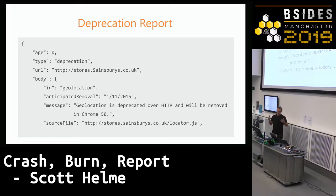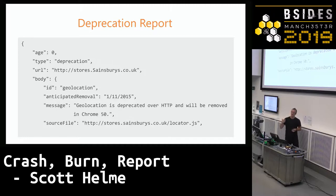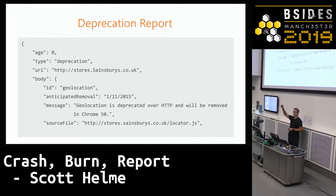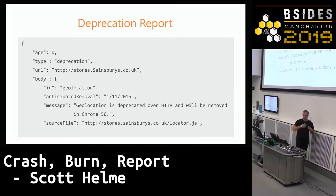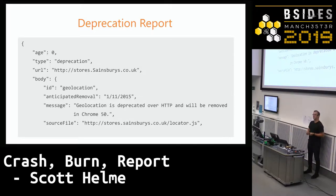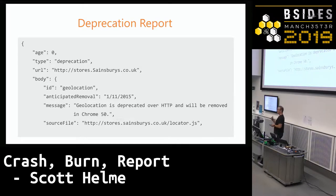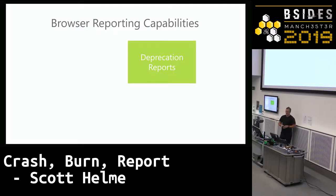If you started to get these reports, you could do something about it. There have been loads of changes in browsers — the number of deprecation reports you can receive right now is massive depending on what features you're using. Chrome is deprecating FTP schemes in the browser probably Q1 next year. If you used FTP, you would know before it broke. That's why I like deprecation reports.